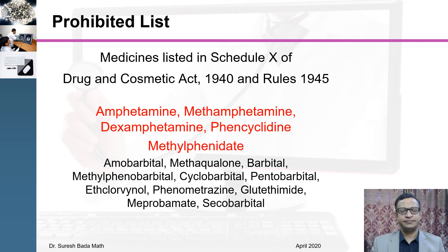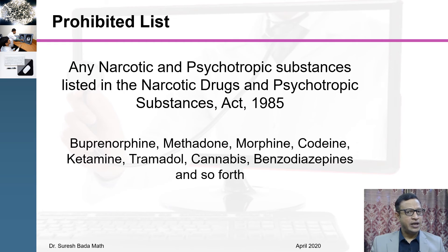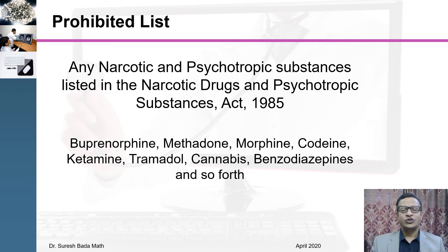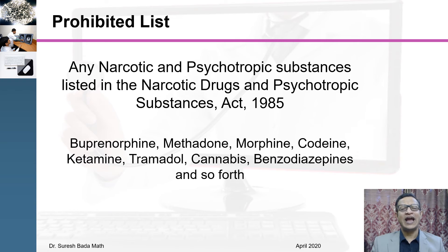Drugs listed under the NDPS Act include buprenorphine, methadone, morphine, codeine, ketamine, tramadol, cannabis, benzodiazepines, and so forth. To view this list, you have to refer to the NDPS Act and look into the schedules, or the drugs listed under small quantity and commercial quantity — these are prohibited and prescriptions cannot be given online.